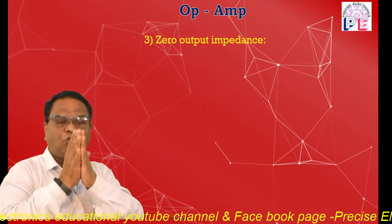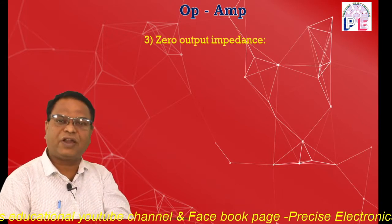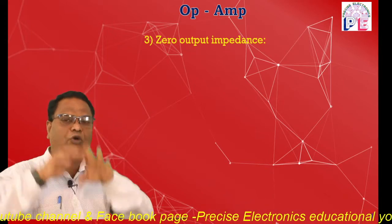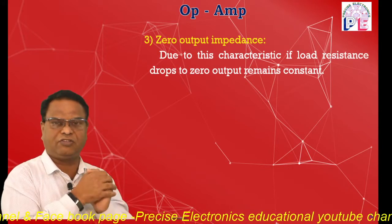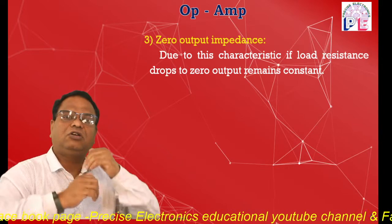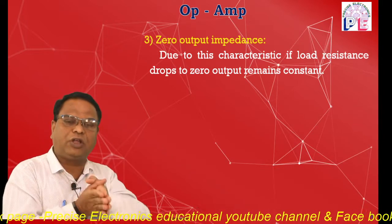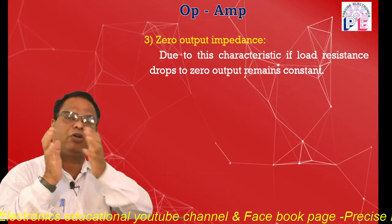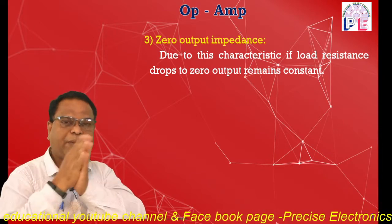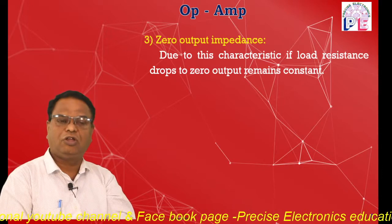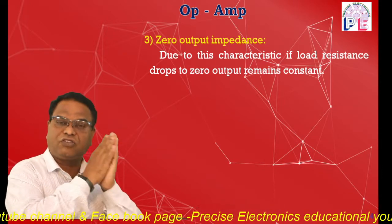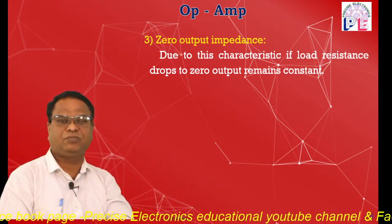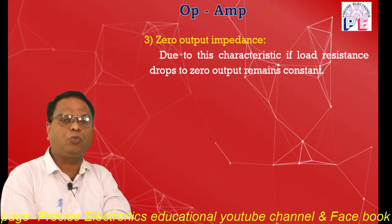The third characteristic is output impedance, denoted Z₀. Output impedance is zero in the case of a perfect amplifier. Due to zero output impedance, if load resistance drops to zero — suppose due to a short circuit accident — it will not affect the output condition of the amplifier. The output signal remains constant.